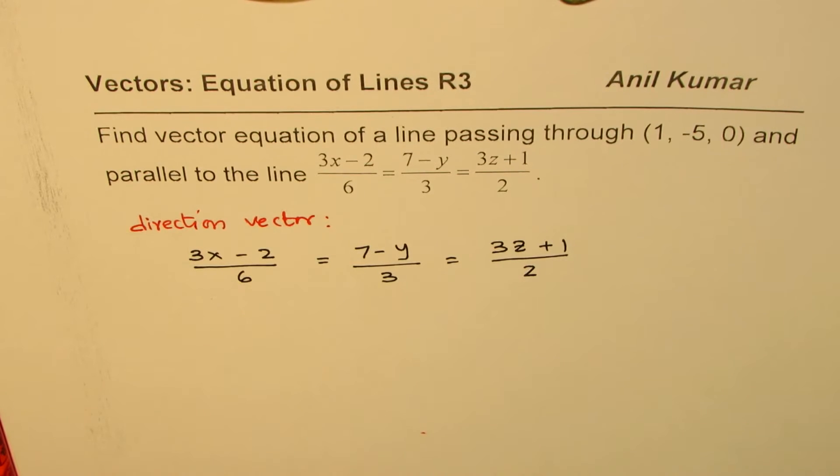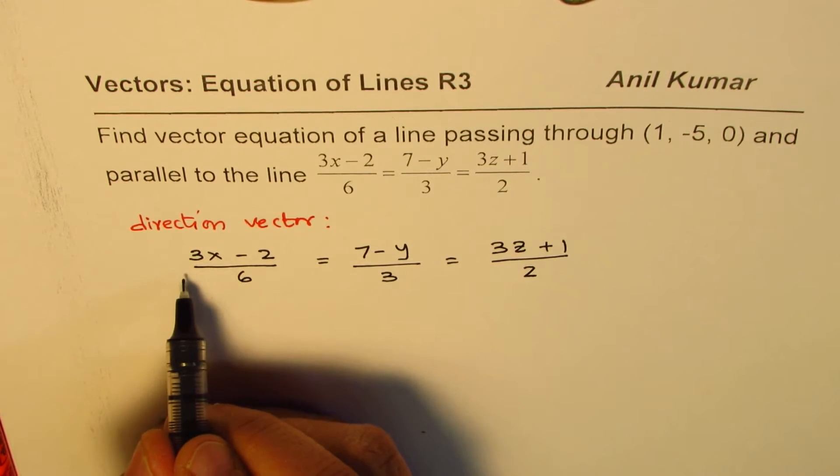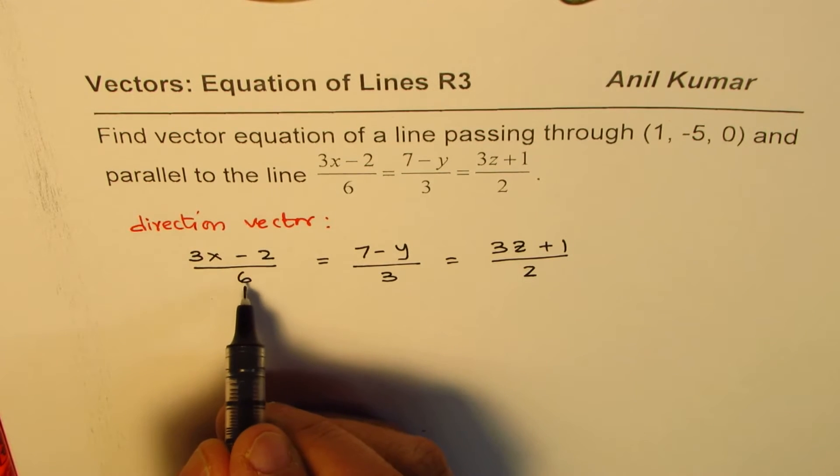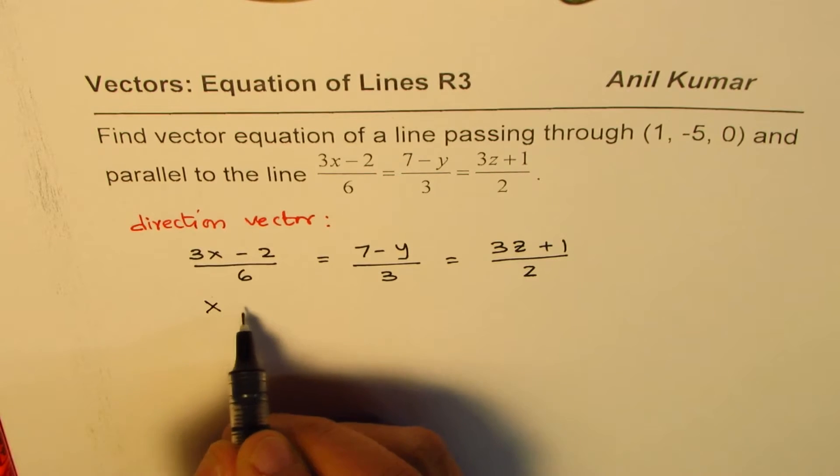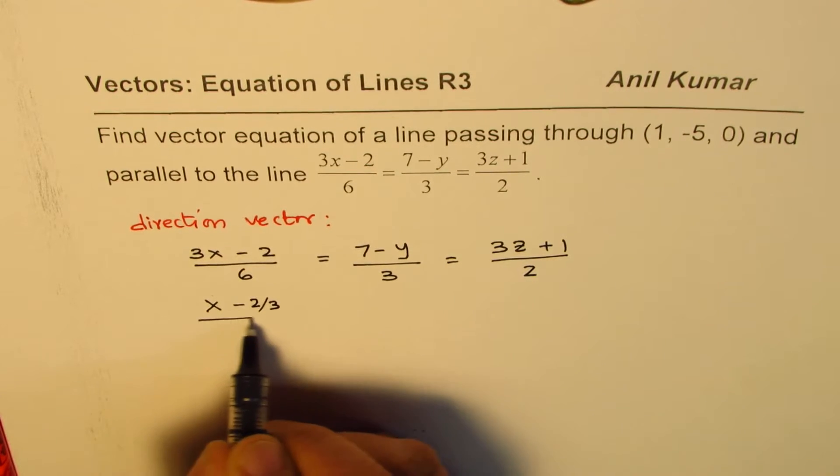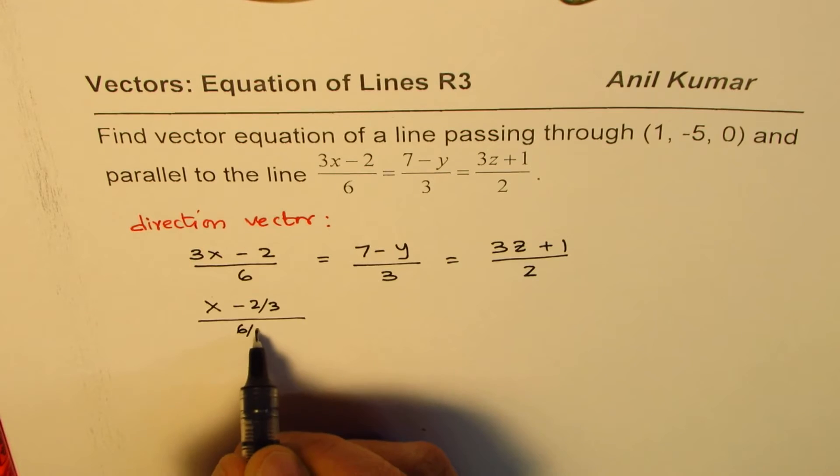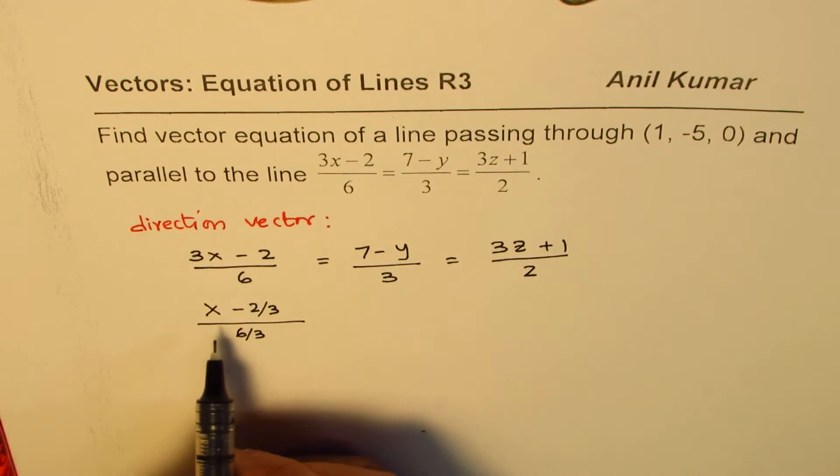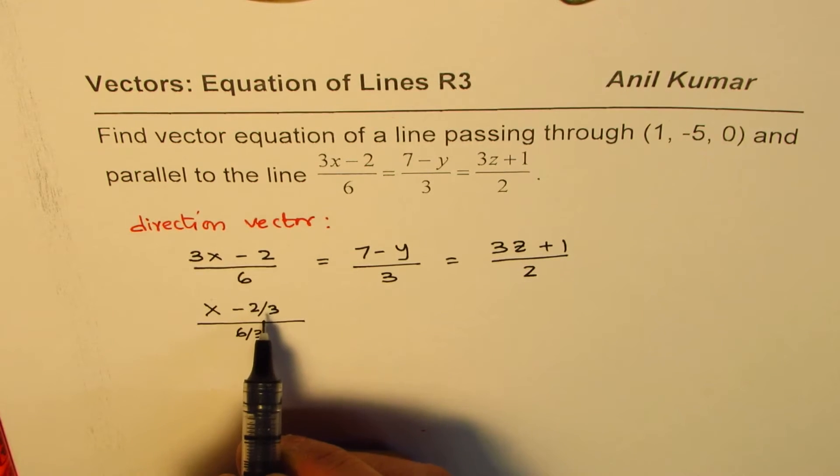What we will do here is divide both numerator and denominator by 3. So if I divide both numerator and denominator by 3 in this case, we get (x - 2/3)/(6/3). We divided every term by 3 in numerator and denominator since we want x - x0. That's the whole idea.